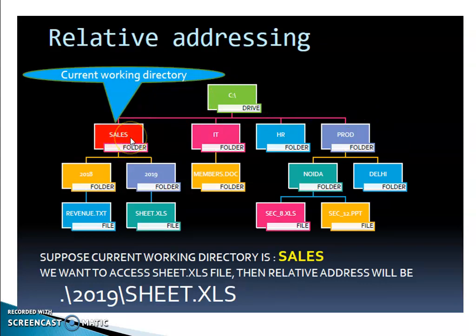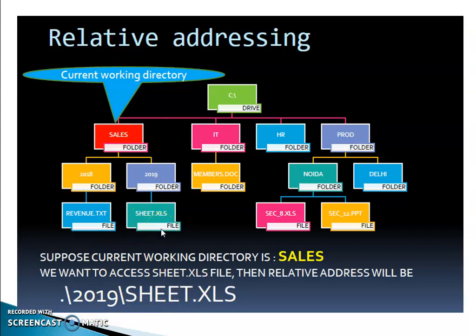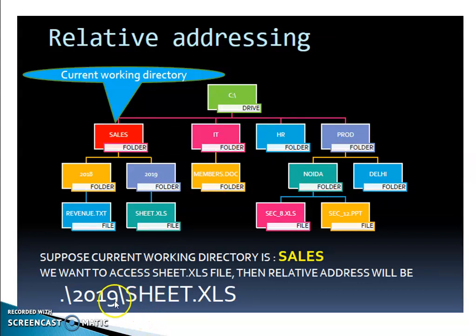Suppose the current working directory is Sales. If you want to access the file C.xls, which is under the 2009 subfolder of Sales, you can use single dot, then slash, then the subfolder name 2009, then C.xls. The first backslash refers to the root directory, and all other slashes separate a directory name from the previous one.